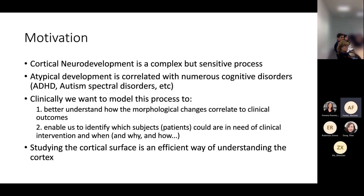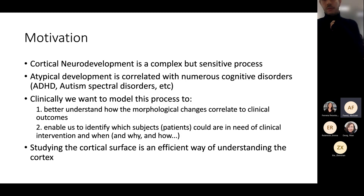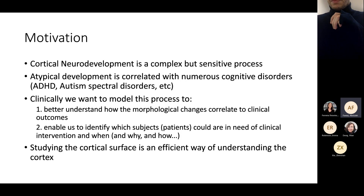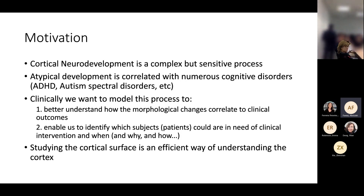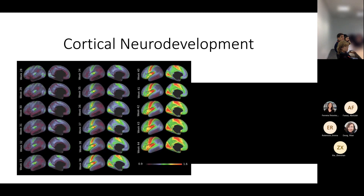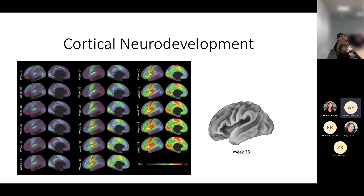There is a clinical motivation here in understanding this process. Studying on the surface is a pretty efficient way of studying the cortex. The human cortex is a surface — it's a folded structure — so that's the native way of understanding it. It's also efficient because the surface is a much more compact representation than the full 3D. We know it contains at least the information we need, and we can make predictions on certain phenotypes as good as if we had the full 3D scan.